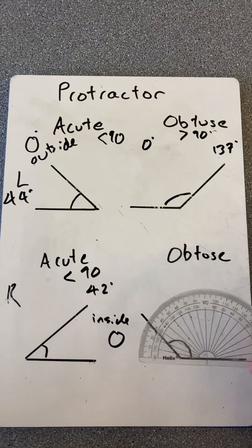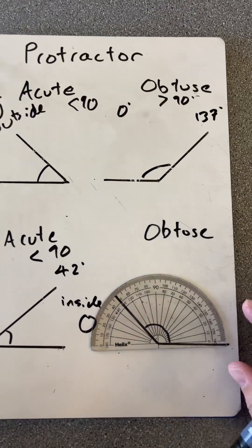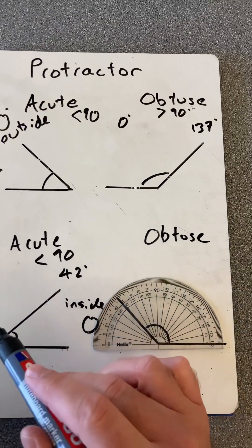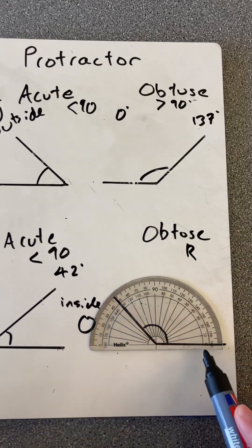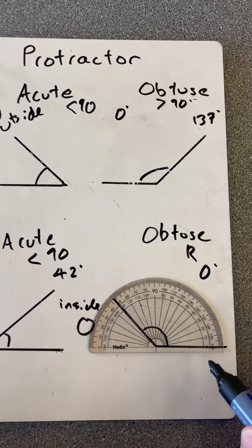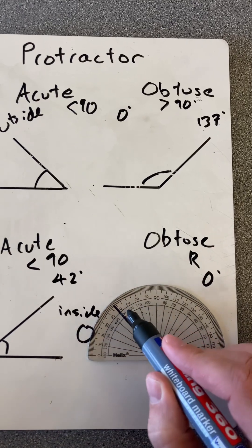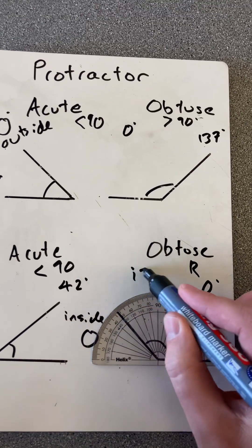If it is an obtuse angle on the right-hand side, again, lay that flat, reading. Because it's on the right, reading on the inside now from zero degrees, zero all the way up to 132 degrees.